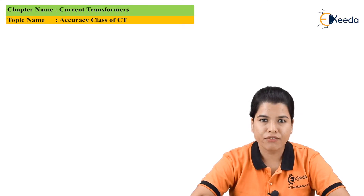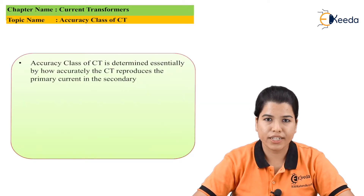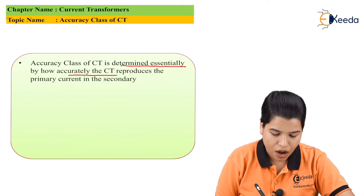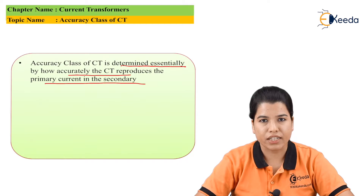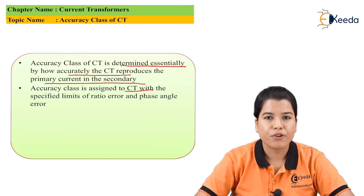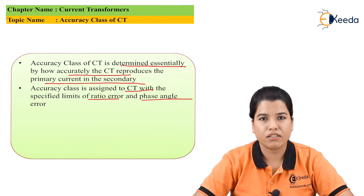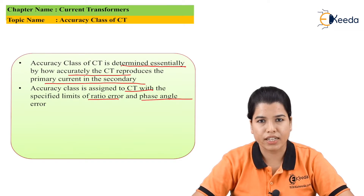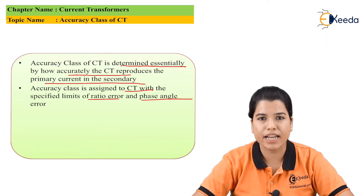The accuracy of CT will be determined by how the CT produces the primary current in terms of secondary current. The accuracy class of CT is determined by how accurately the CT reproduces the primary current in the secondary winding. The accuracy class is assigned to CT with specified limits of ratio error and phase angle error. In terms of ratio error and phase angle error, the accuracy class of the CT can be specified.